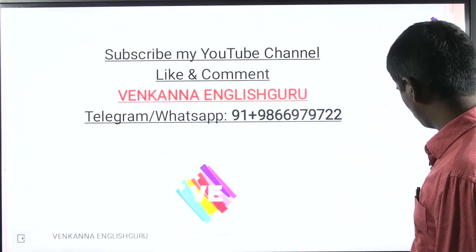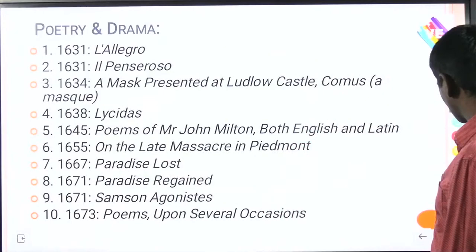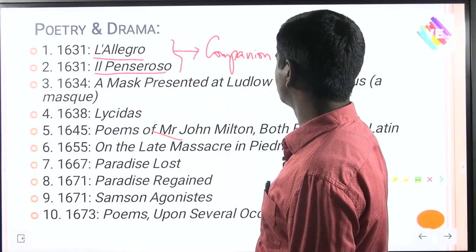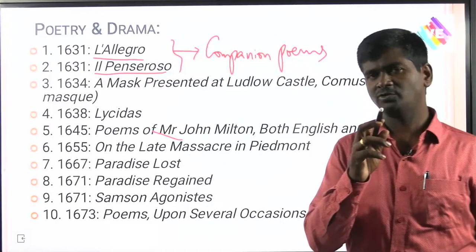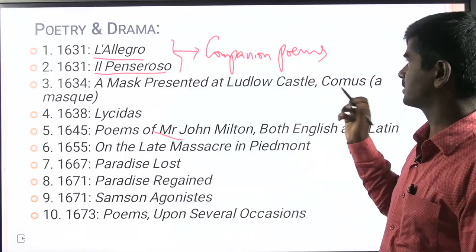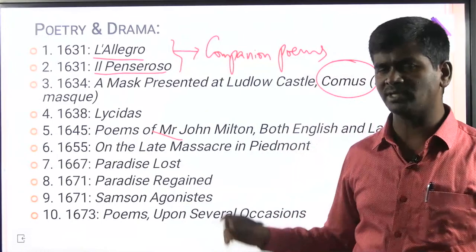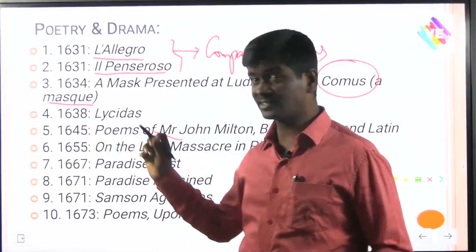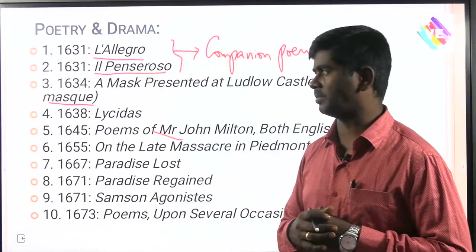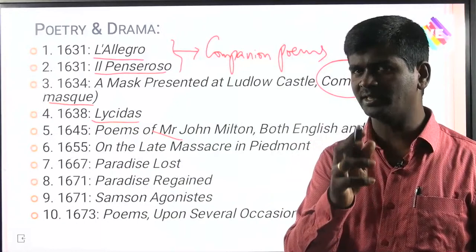The important works of John Milton include: L'Allegro and Il Penseroso — these are very important companion poems of John Milton, asked several times in NET history. What are the companion poems of John Milton? L'Allegro and Il Penseroso. Also, Comus — a masque presented at court. A masque is a stage performance specifically designed for the court and sophisticated audiences. And Lycidas, written in 1638, a popular pastoral elegy written on the death of Edward King.